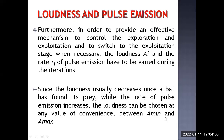When performing exploration and exploitation, two factors control these stages: the loudness A_i and the rate R_i of pulse emission. The bat sends pulses at a particular pulse rate R_i. Both loudness and pulse rate must be varied. Based on how they vary, the exploration and exploitation behavior of the algorithm is determined.